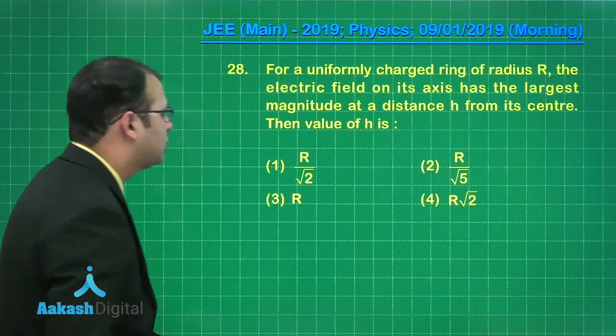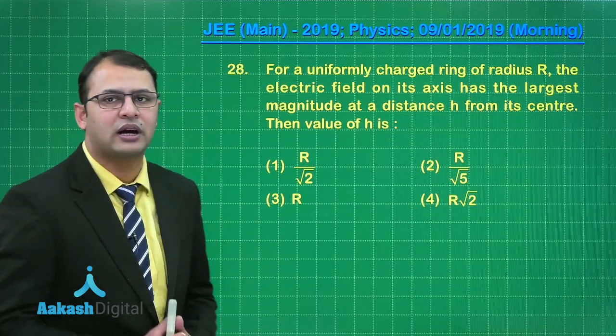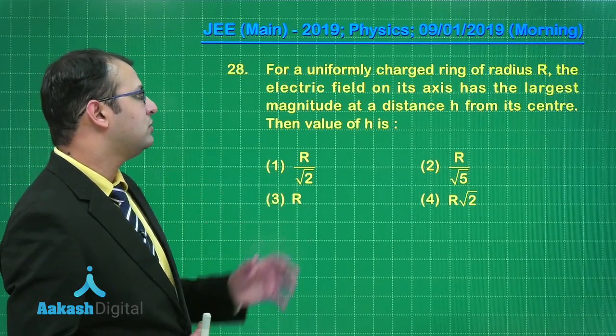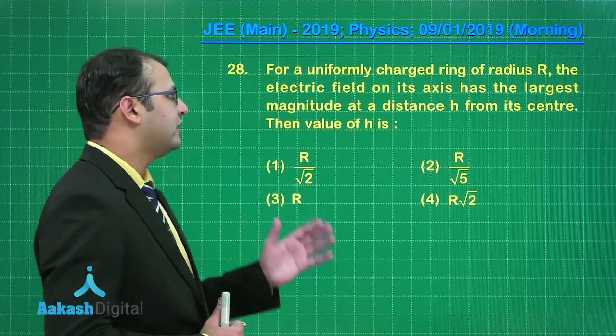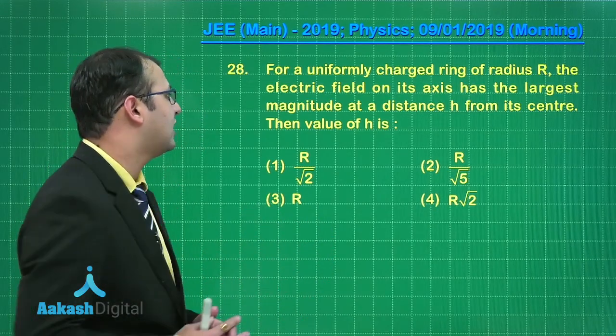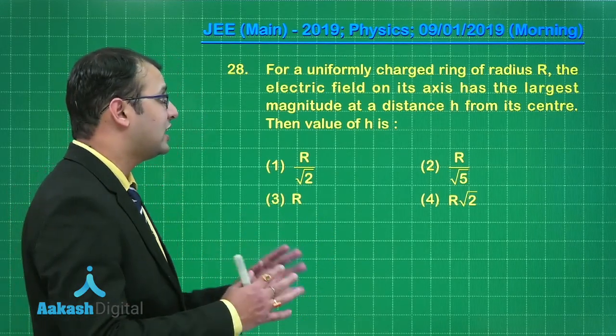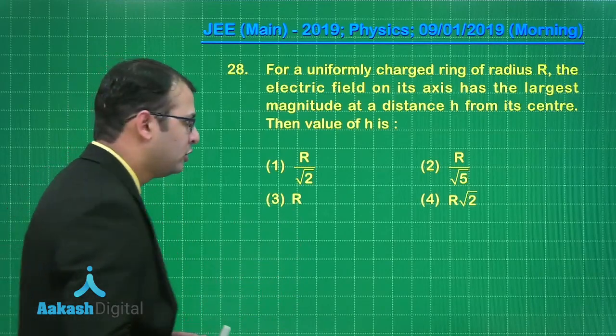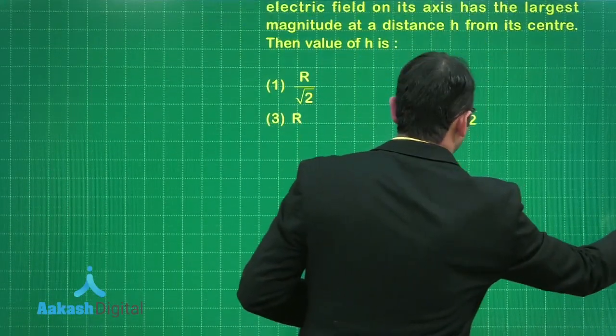So friend, let's take our question number 28. Now this question belongs to section of electromagnetism. Here a uniformly charged ring of radius R, the electric field on its axis has the largest magnitude at a distance h from its center and we have to find the value of h. Let's see how to solve this question.